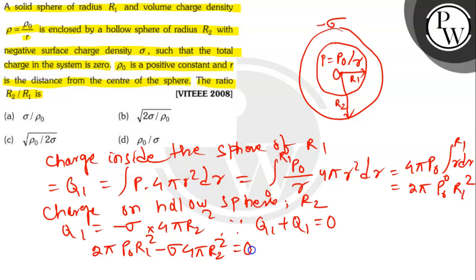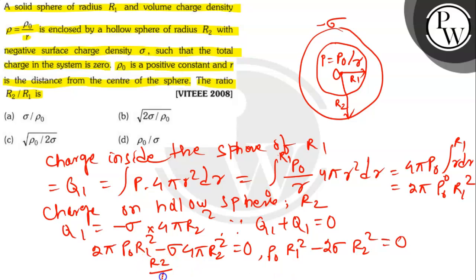So here Q1 plus Q2 equals to 0. So 2 pi P0 R1 square minus sigma times 4 pi R2 square equals 0, which gives P0 R1 square minus 2 sigma R2 square equals 0, which means R2 by R1 equals root over of P0 divided by 2 sigma. So option number C is the right answer.